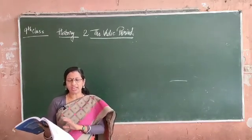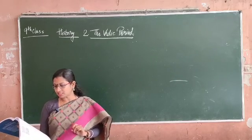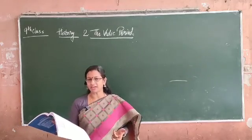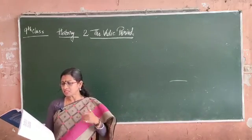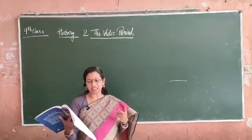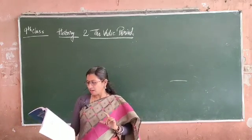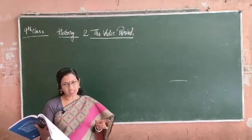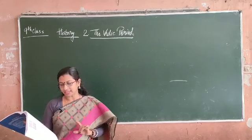There are about 300 Upanishads. Some of the most famous ones are Chandogya, Brihadaranyaka, Aitareya, and Taittiriya. These four are very, very famous among all the Upanishads.